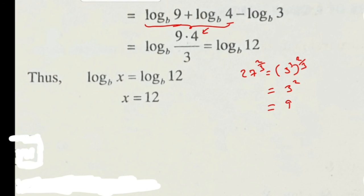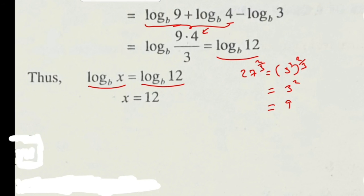Then log_b(36) minus log_b(3) equals log_b(36/3) by property 6, and 36/3 = 12. So the right-hand side simplifies to log_b(12). Since log_b(x) = log_b(12) and the log function is one-to-one, x = 12.